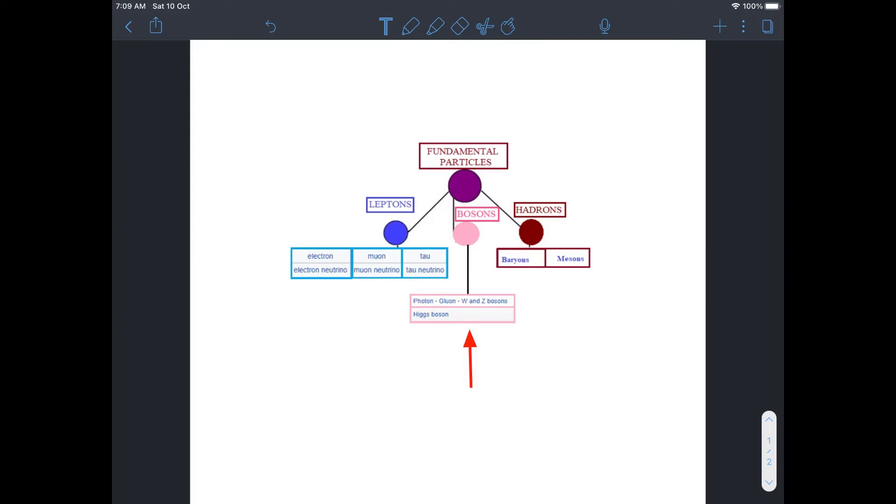These are the bosons and they are also known as field particles: photon, gluons, W plus, W minus and Z zero bosons, and Higgs bosons.